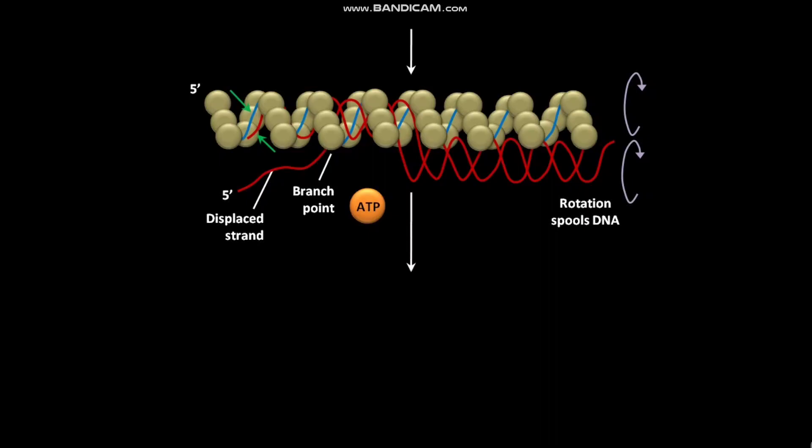In the next step, an ATP molecule undergoes hydrolysis to produce ADP and PI. The ADP and PI are then released. This ATP hydrolysis is catalyzed by RecA protein.